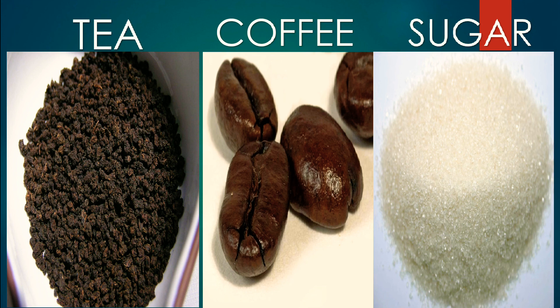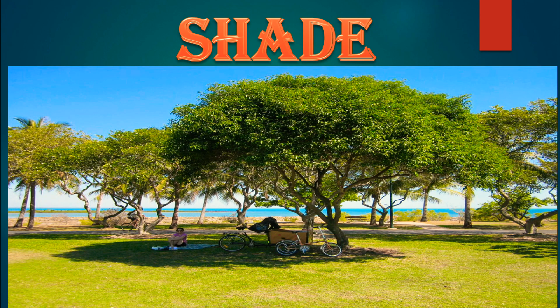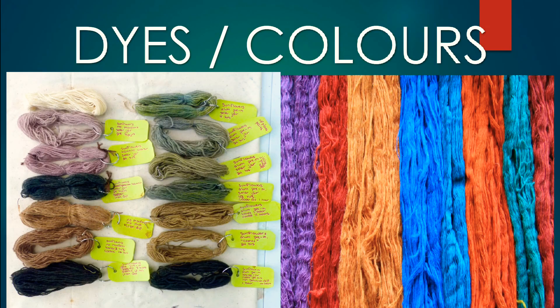Plants give us spices. We get spices like cardamom, black pepper and cinnamon from plants. Spices add flavor to our food. Trees give us shade. The plant is useful even when it dies — it helps the soil become better. Dyes or colors are made from the seeds and flowers of some plants. Dyes are used to color clothes.